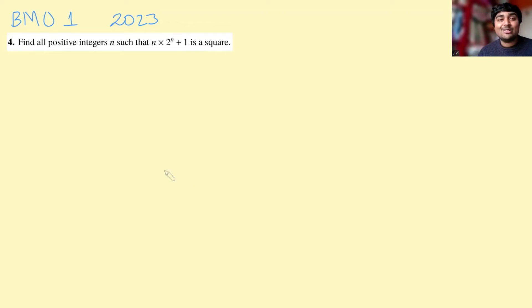This problem is from the BMO 1 2023. We want to find all positive integers n such that n times 2 to the n plus 1 is a square. Let's get stuck into a solution.